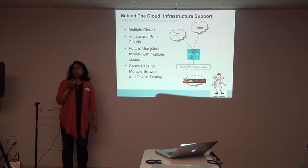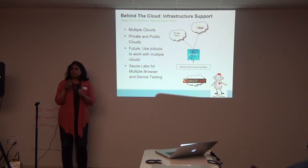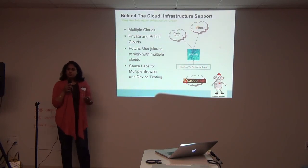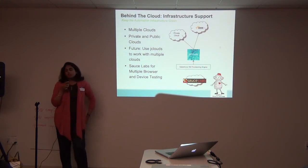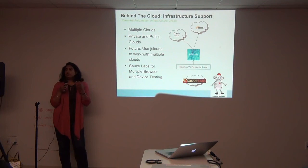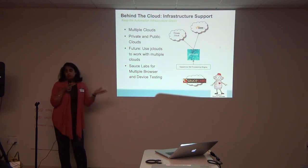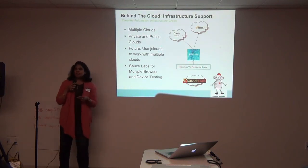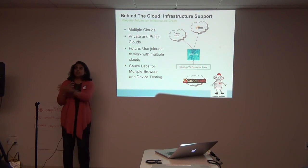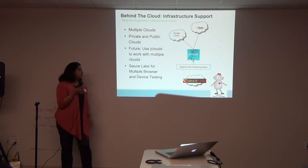Sometimes we have a surge of check-ins, like when engineers rush to meet deadlines. Instead of investing in more internal infrastructure to address that, we use Amazon and other public clouds to run our tests there — transparent to the users. The test automation team found it really difficult to work with multiple clouds, so now we're moving to jClouds, an open source tool that makes your system work with any cloud. We also have a partnership with Sauce Labs, because every week there's a new browser version and new devices, making it difficult to scale your infrastructure to test all those combinations.